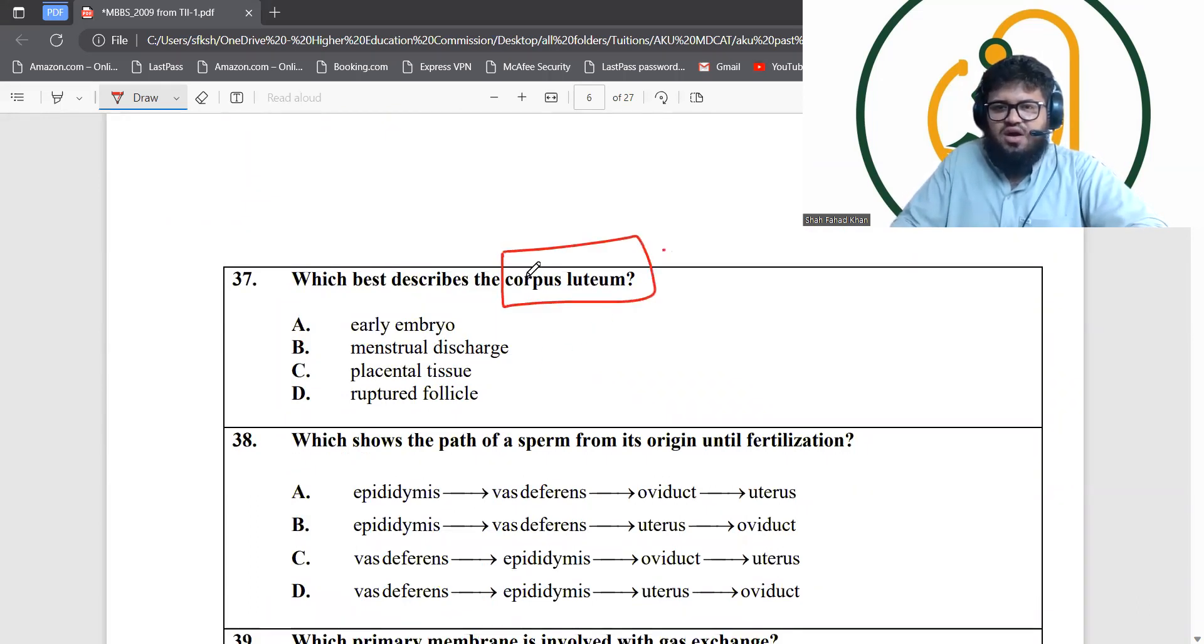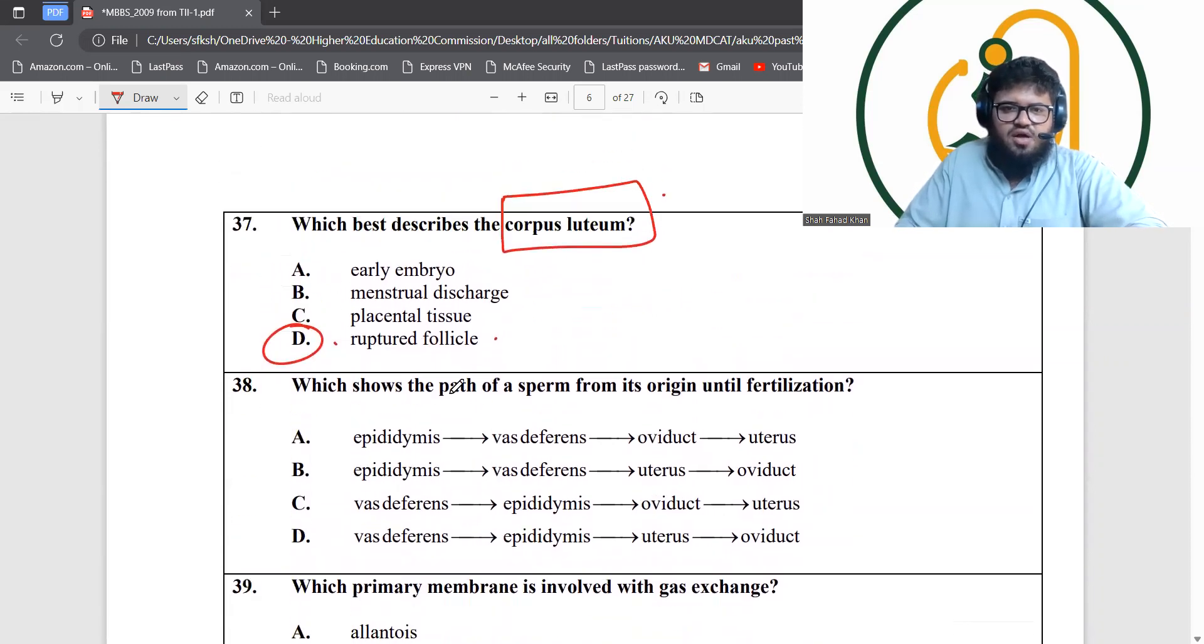Which best describes the corpus luteum? Corpus luteum is formed after the rupture of the ovum from the ovary. Rupture of the female gamete from the ovary results in the formation of corpus luteum from the ovarian follicles. Once the Graafian follicles rupture, they release the ovum and form the corpus luteum. So corpus luteum is the ruptured Graafian follicle.